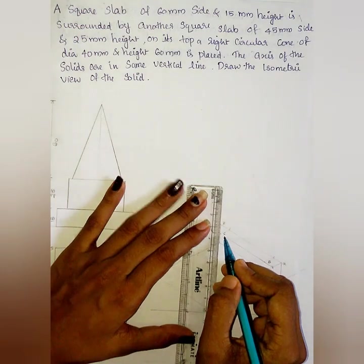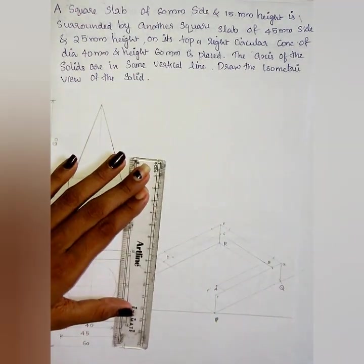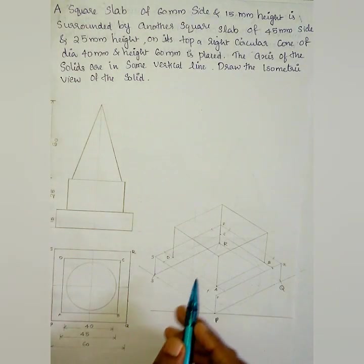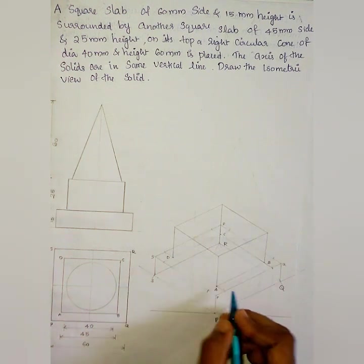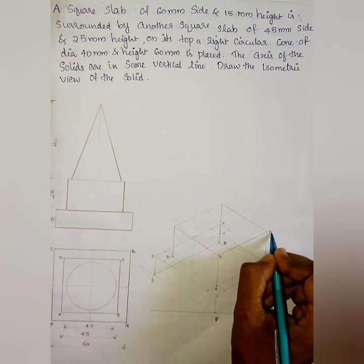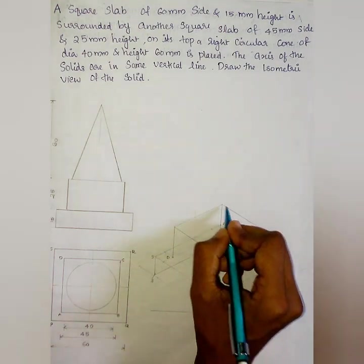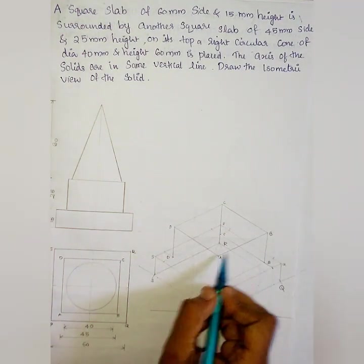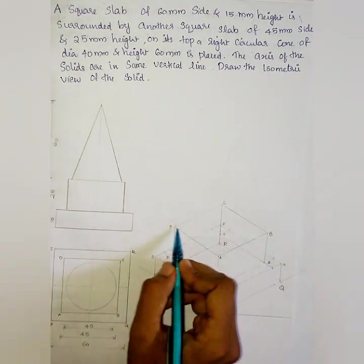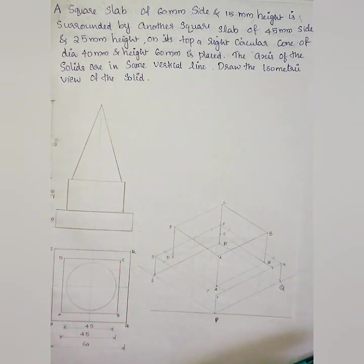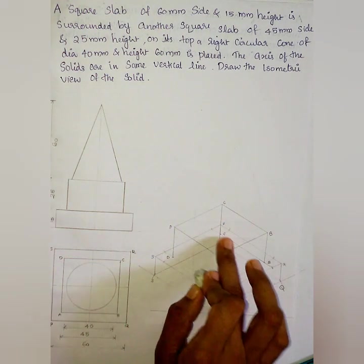The second square slab top surface points are labeled A, B, C, D. Point A is at the top of a, B is at the top of b, C is at the top of c, and D is at the top of d. We join A, B, C, D to complete the top face of the second square slab.